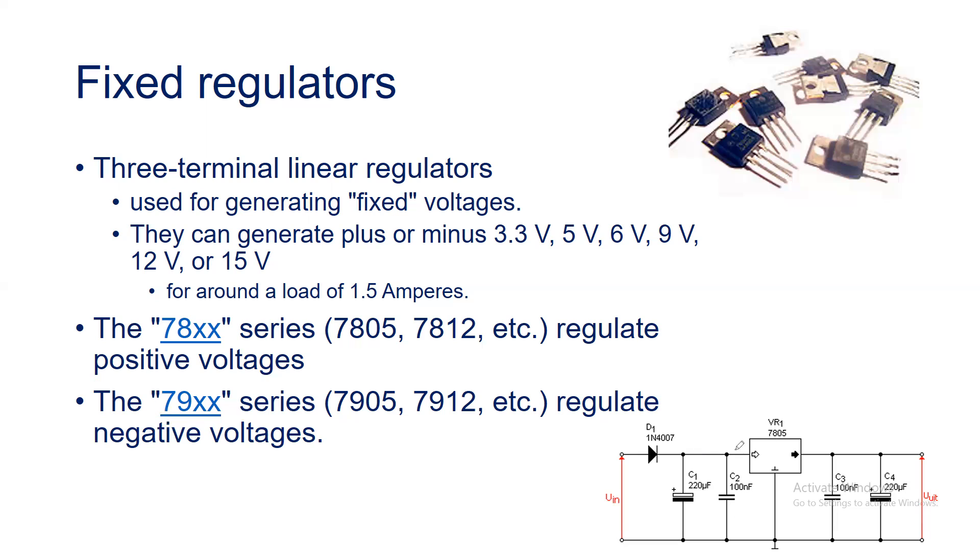Now the 7805 will start its operation from this end and complete that operation up to the output. It will take that unregulated voltage and convert it to the constant 5 volt output. These capacitors are used to provide stability in the circuit.